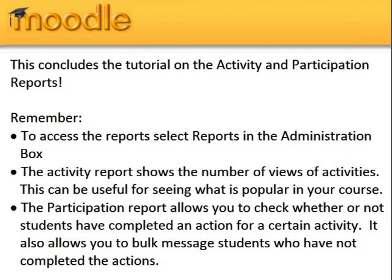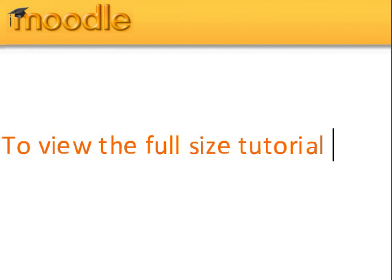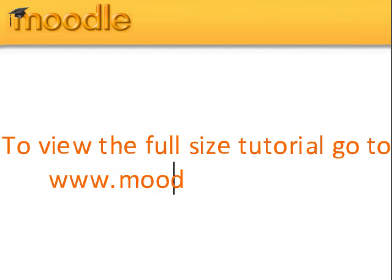This concludes the tutorial on Activity and Participation Reports. Remember, to access the reports, select Reports in the Administration box. The Activity Report shows the number of views of activities, which can be useful for seeing what is popular in your course. The Participation Report allows you to check whether or not students have completed an action for a certain activity, and also allows you to bulk message students who have not completed the action. To view the full-size tutorial, go to www.moodletutorials.org.